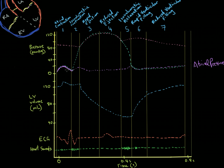As pressure decreases in the atrium, the pressure in the left ventricle has overtaken the pressure in the left atrium. So now the pressure in the ventricle is greater than in the atrium, and that forces the mitral valve shut. So here we note: mitral valve closes.